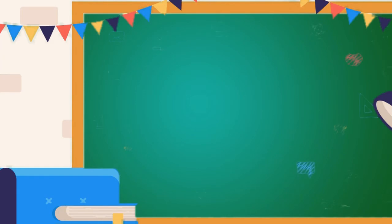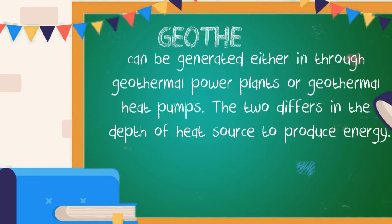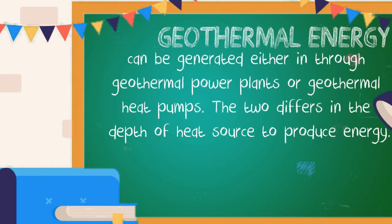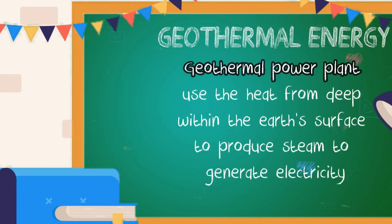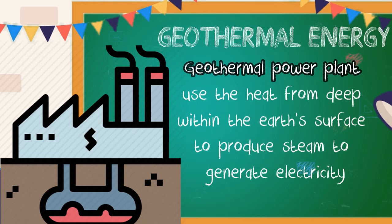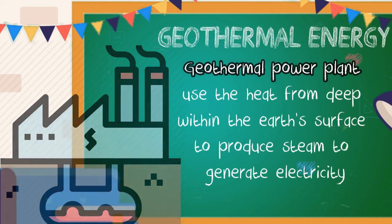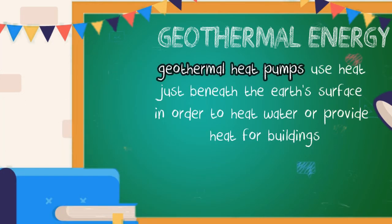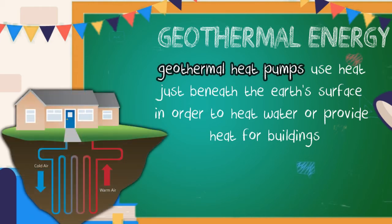Geothermal energy can be generated through geothermal power plants or geothermal heat pumps. The two differ in the depth of the heat source used to produce energy. Geothermal power plants use heat from deep within the earth's surface to produce steam and generate electricity. Geothermal heat pumps, on the other hand, use heat just beneath the earth's surface to heat water or provide heating.